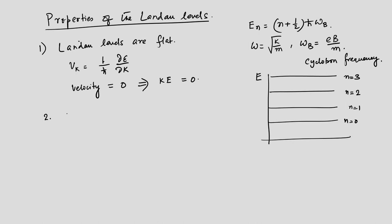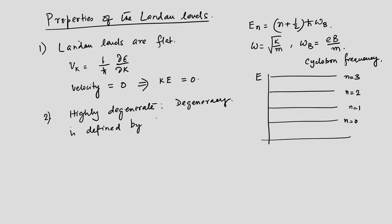Let's talk about another property: the levels are highly degenerate, and what are the implications of that? We have said the degeneracy is determined by the magnetic field and the area A of the sample. Now these plateaus that I've shown several times — the Hall resistivity plateaus — are connected to this degeneracy.